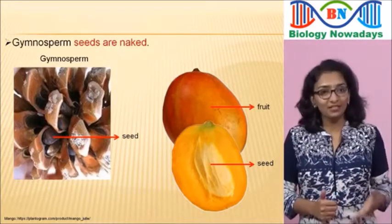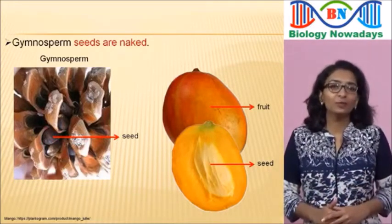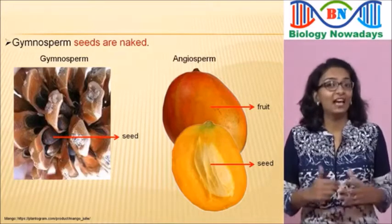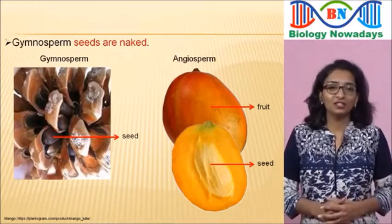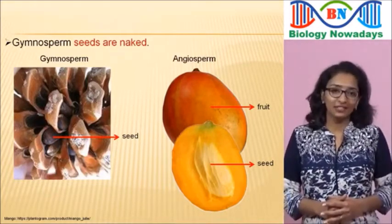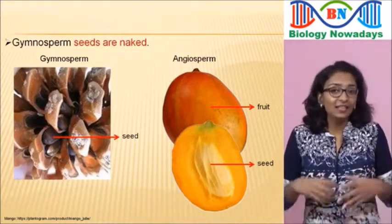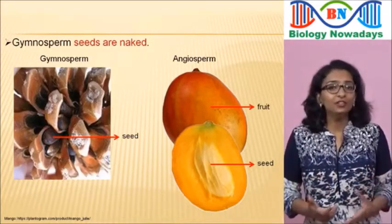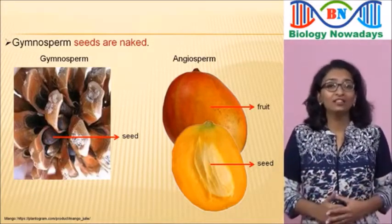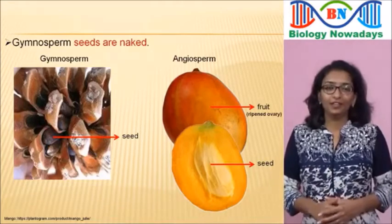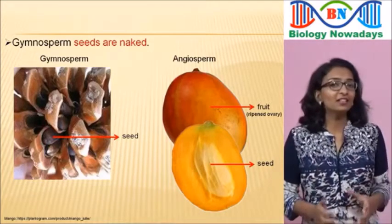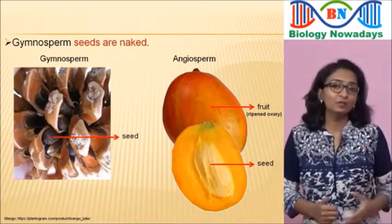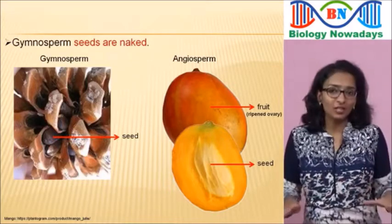This is because the mango tree belongs to the group angiosperms. Angiosperms have structures called ovaries inside which seeds are formed. The fruit is actually the ripened ovary. Since ovaries are absent in gymnosperms, the seeds of gymnosperms are not covered.